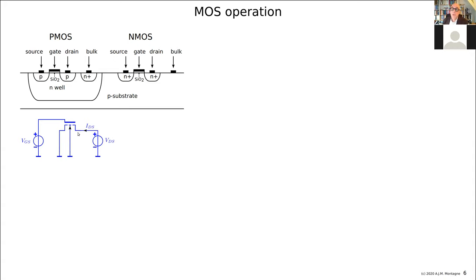You could easily flip the source and the drain. If you look at the picture, it's exactly the same — if the device is symmetrical, there's no distinction between source and drain. You can flip the two and call one the reverse operation and the other the forward operation. This is definitely not the case for power MOSFETs, because they are not symmetrical at all, but for many small signal MOSFETs this is valid.